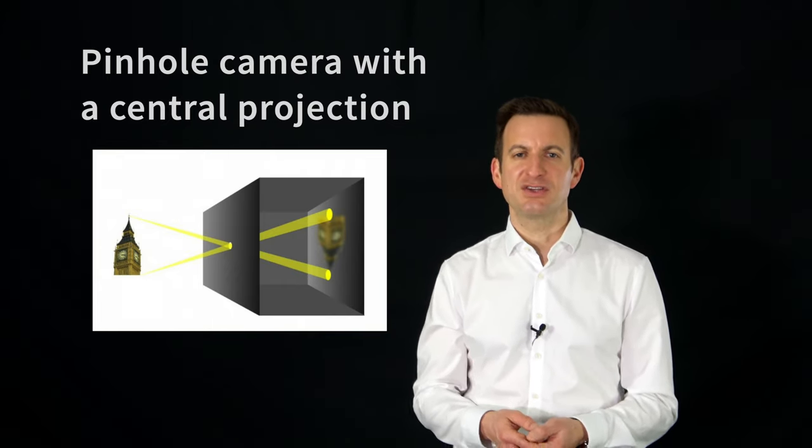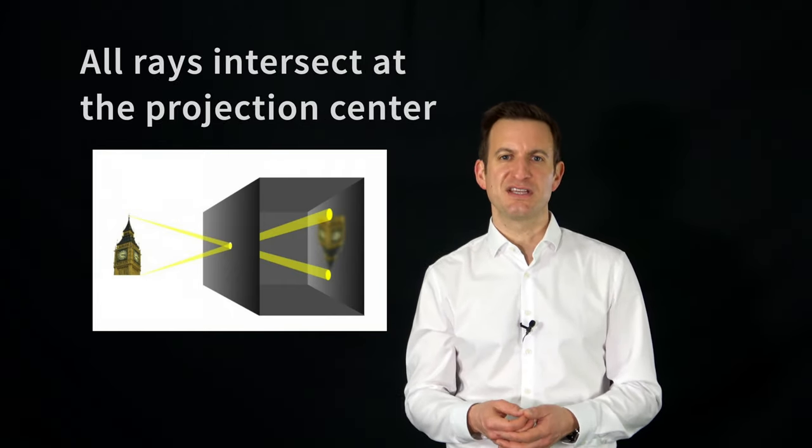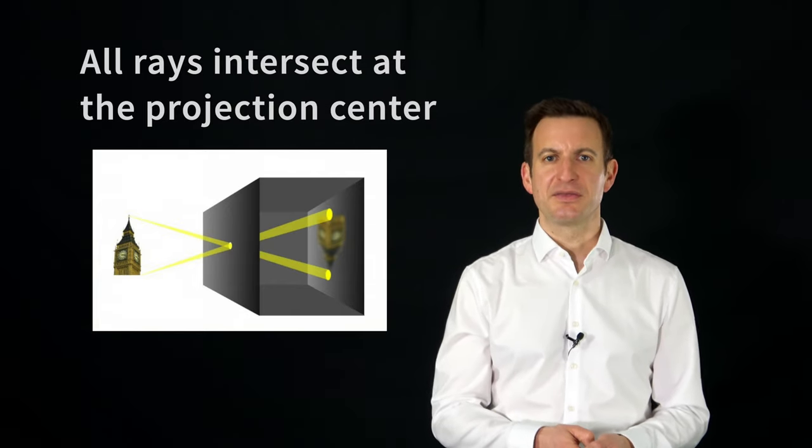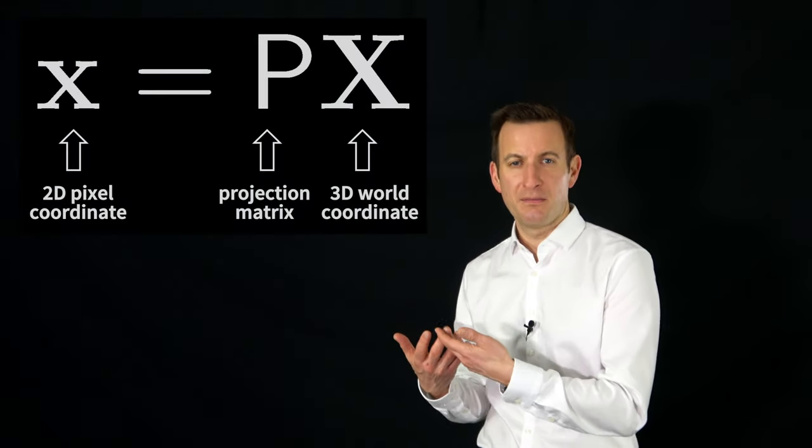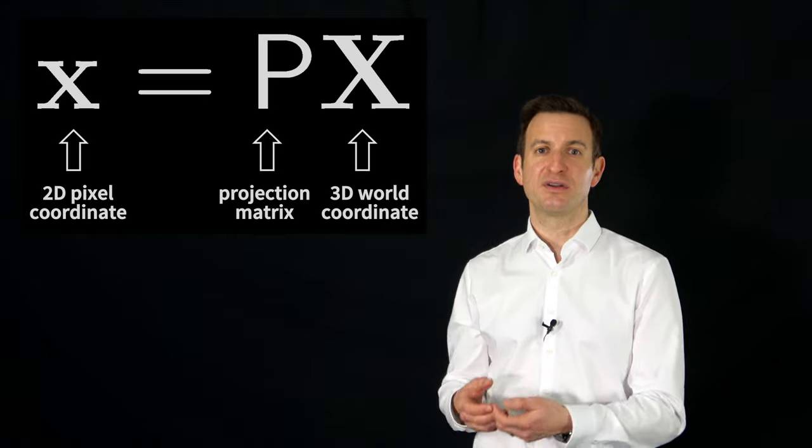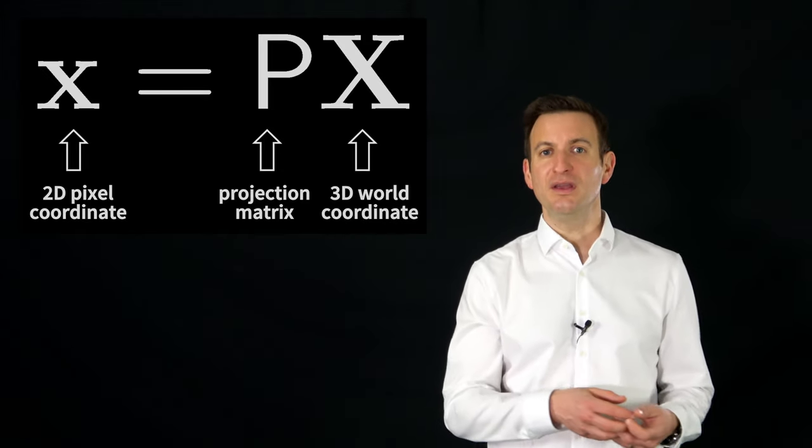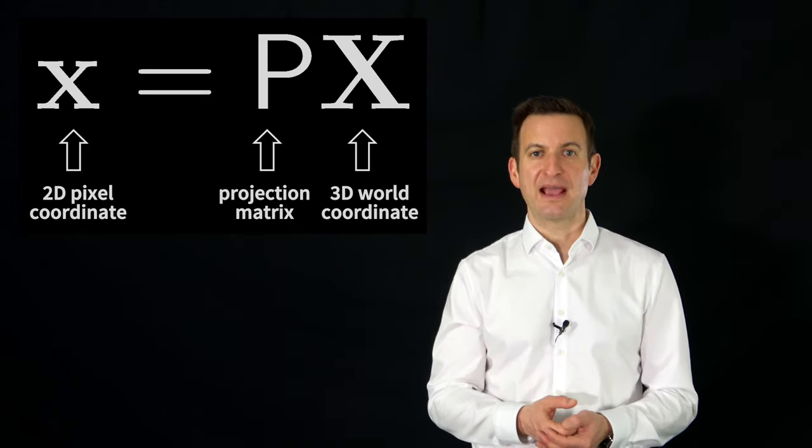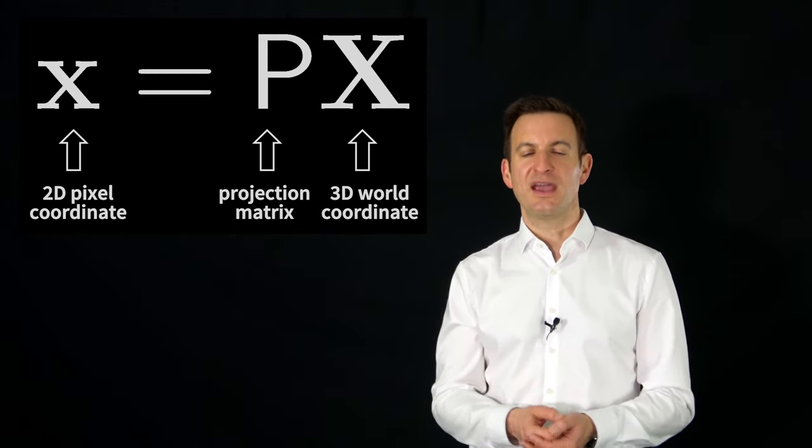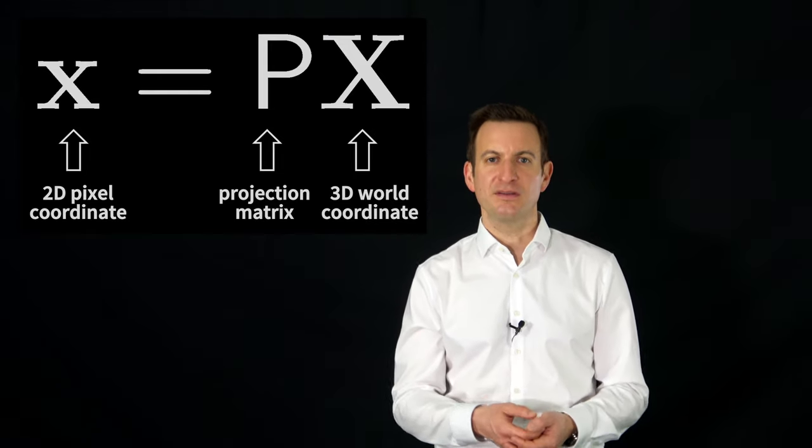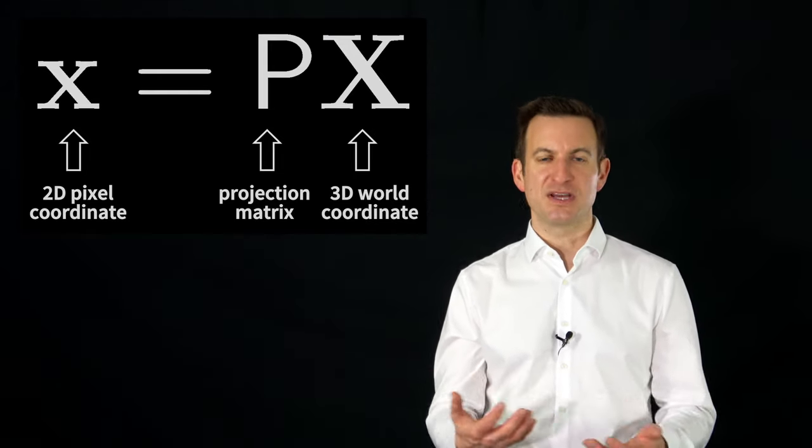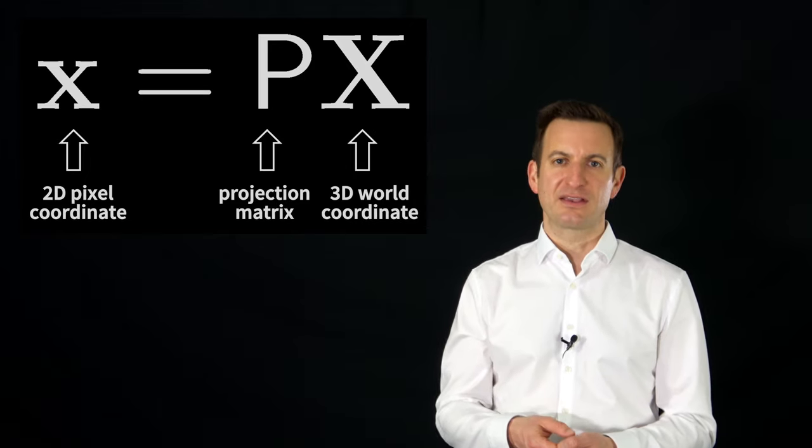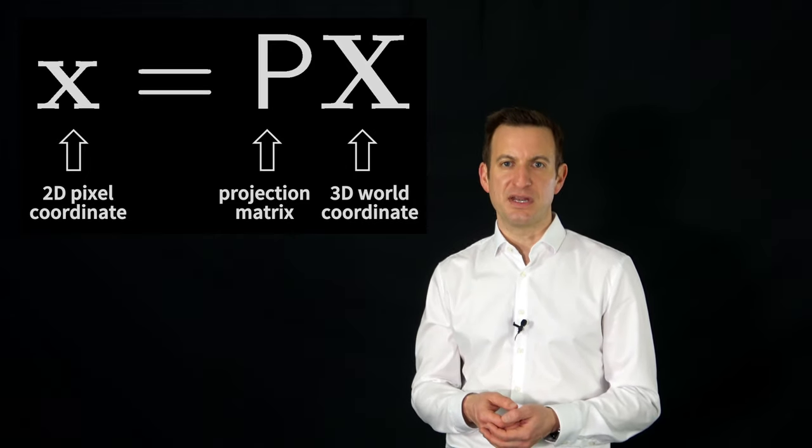The idea of the central projection is that there's a single point, the projection center, and basically all rays of light pass through that point. And in this case we can describe the mapping of a point with an X, Y, and Z coordinate from the 3D world onto a 2D pixel location with this simple form x equals PX. Lowercase x here is the pixel coordinate, P is this projection matrix, this transformation we want to talk about, and capital X is the point in the 3D world.